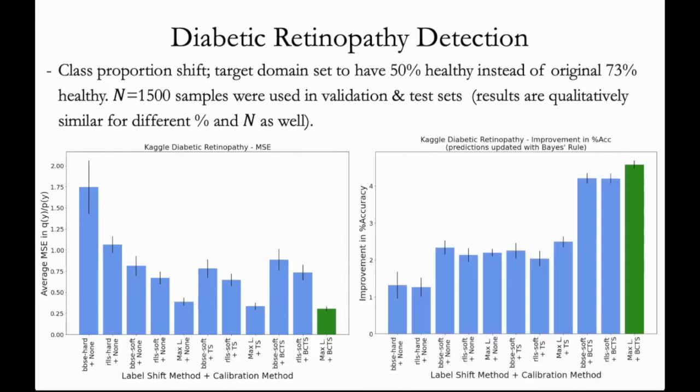Also, just to demonstrate improvements in accuracy, recall that an advantage of our proposed approach is that once we have the calibrated probabilities, we can apply Bayes' rule to update the classifier without having to do any retraining. And in this case, using Bayes' rule with our proposed BCTS calibration, we get over a 4% boost in accuracy.